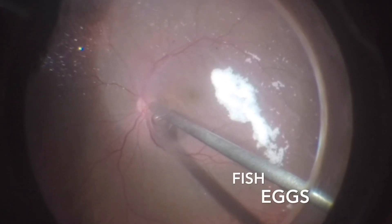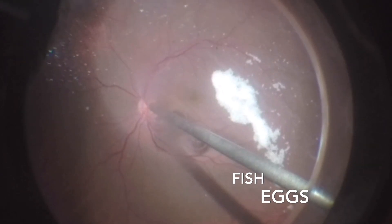Small bubbles of PFCL are a risk for subretinal migration, especially in cases of traction, PVR, retinectomy, or large retinal tears.